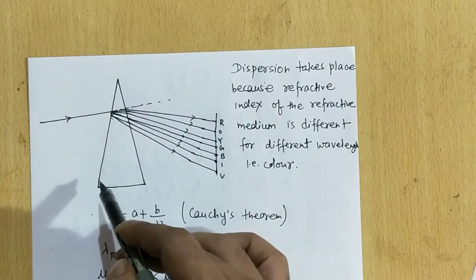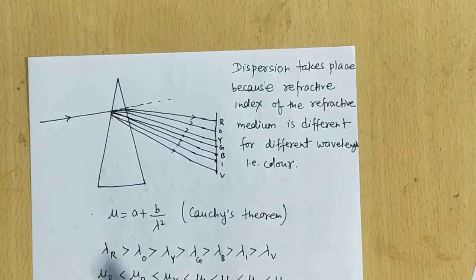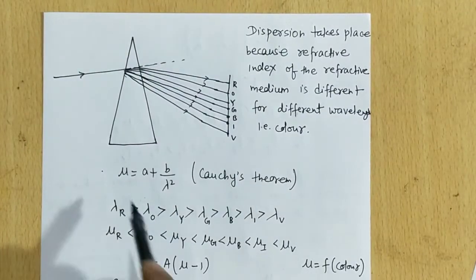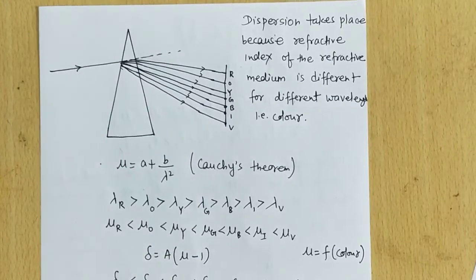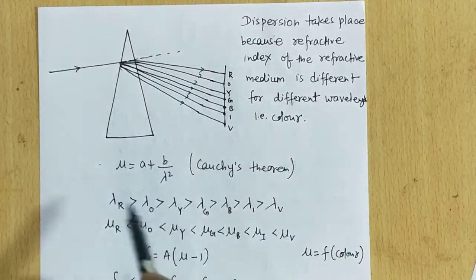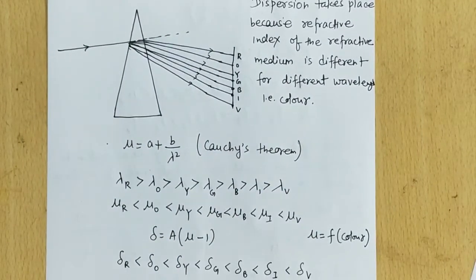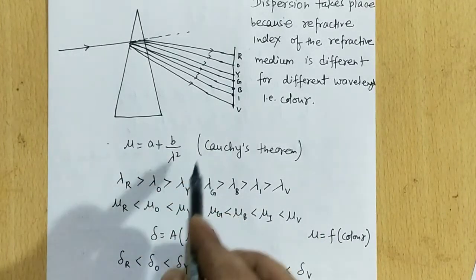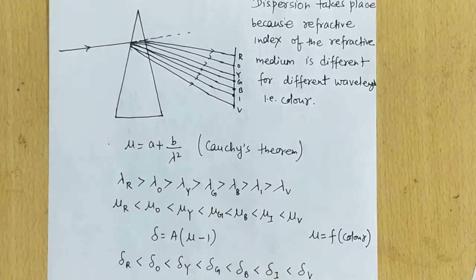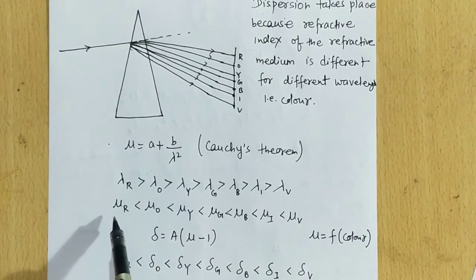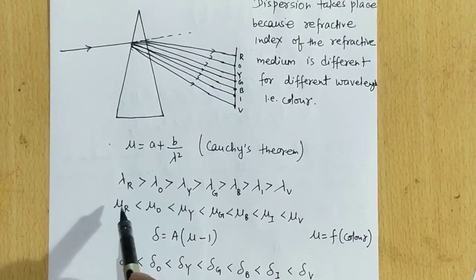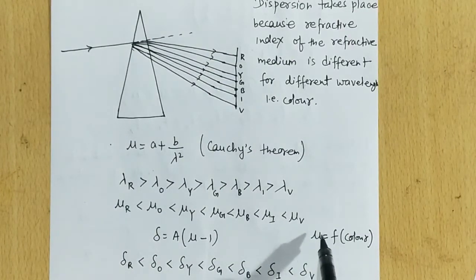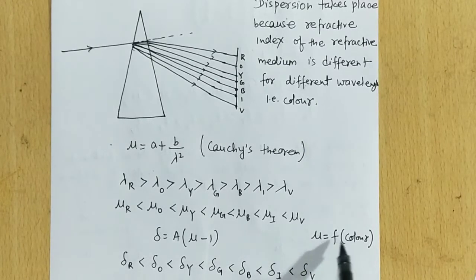The refractive index μ of the prism is not a constant; it depends on color. From the Cauchy relation, μ = a + b/λ², which gives the relationship between refractive index and wavelength λ. Red color has the maximum wavelength and it keeps decreasing toward violet. So from Cauchy's theorem, if λ is more, μ will be less. Therefore the order of refractive index is inverse to the order of wavelength: μ of red color is minimum and μ of violet color is maximum.